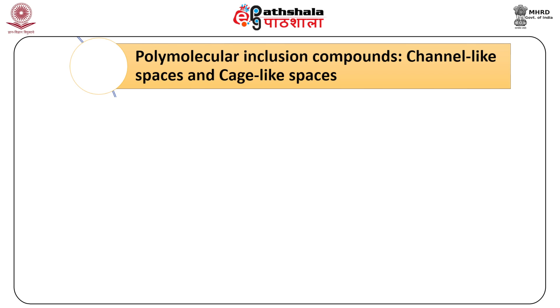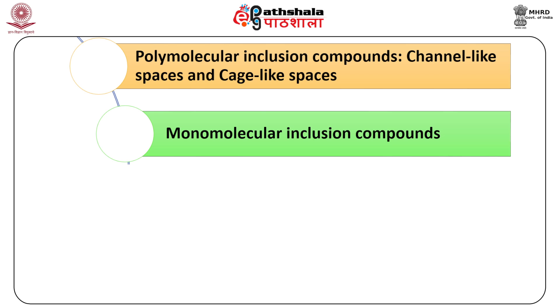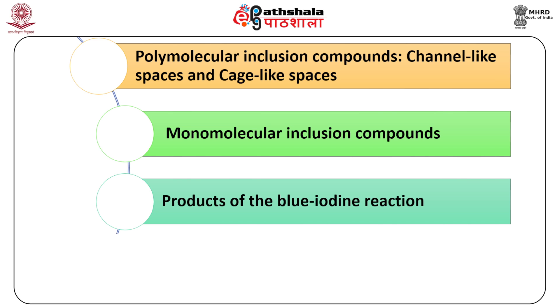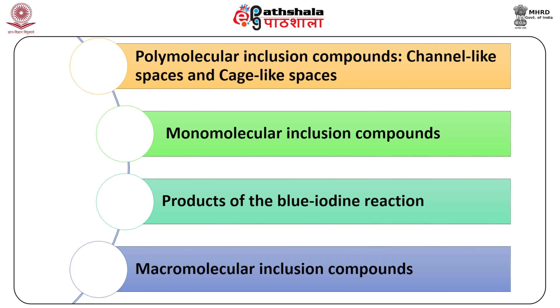A more convenient and workable classification is based on the organization of inclusion compounds by their structure and properties. We have different categories: first, polymolecular inclusion compounds, which have cavities like channel or cage-like spaces; then monomolecular inclusion compounds; then the products of blue iodine reaction — you know that iodine forms blue complexes with starch — and finally, macromolecular inclusion compounds.